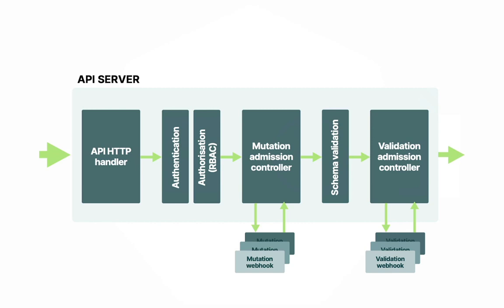Now that we know about the mutations admission controller and validation admission controller, wouldn't it be great if we could design and implement our own rules? Well, great news — it can definitely be done. You can write your own scripts with your rules and register them with the mutation admission controller. You can also do the same with the validation admission controller — for example, deciding if a resource should be rejected from reaching etcd. Kubernetes customization — we love it.